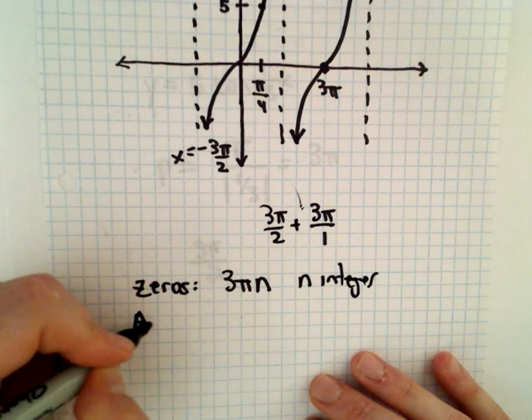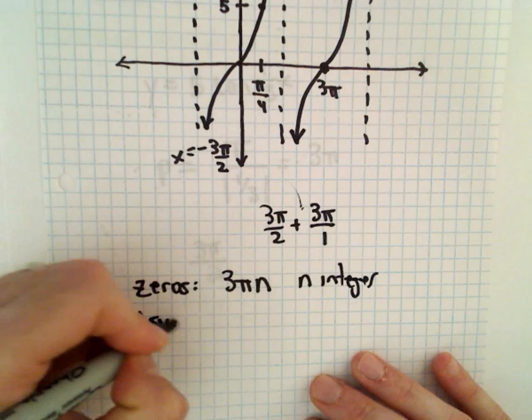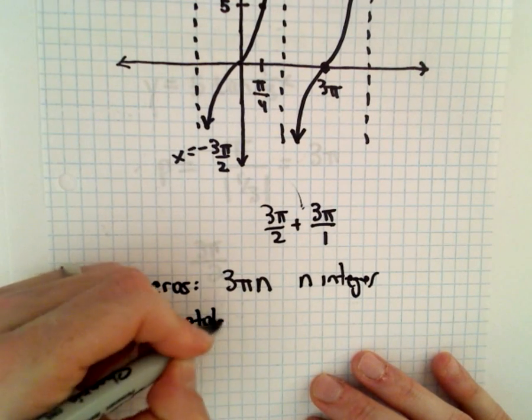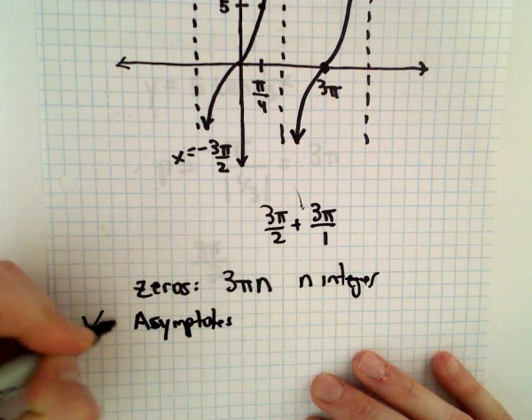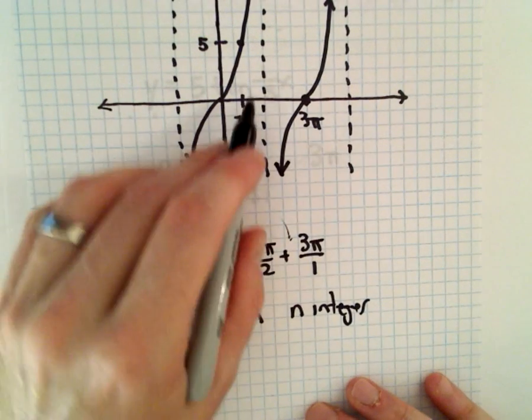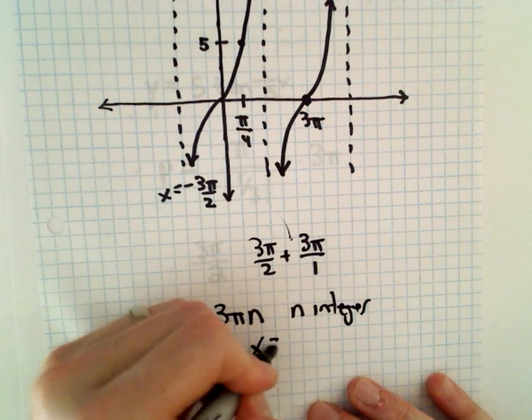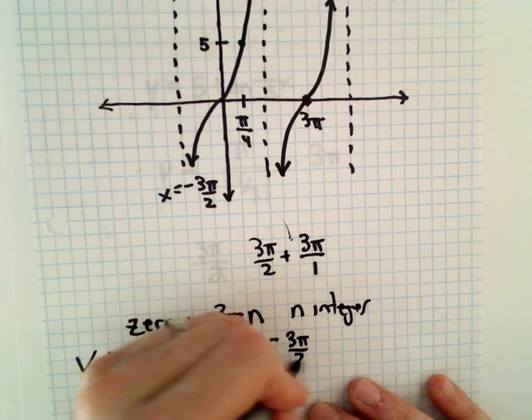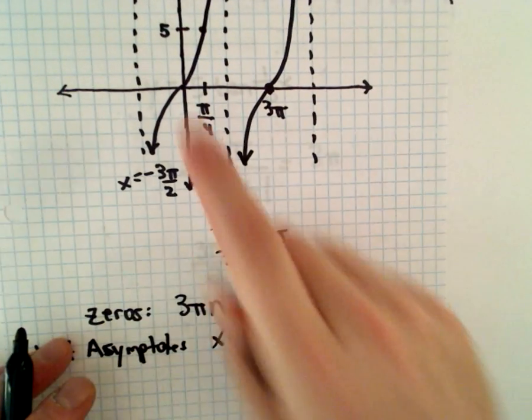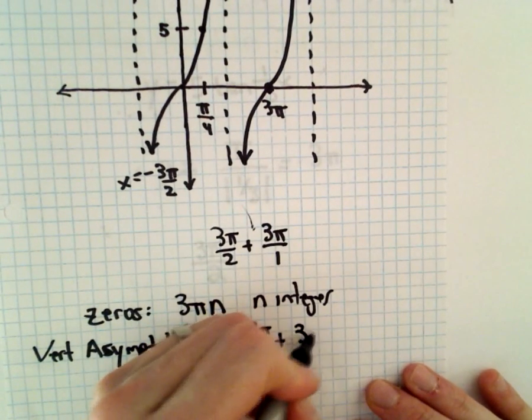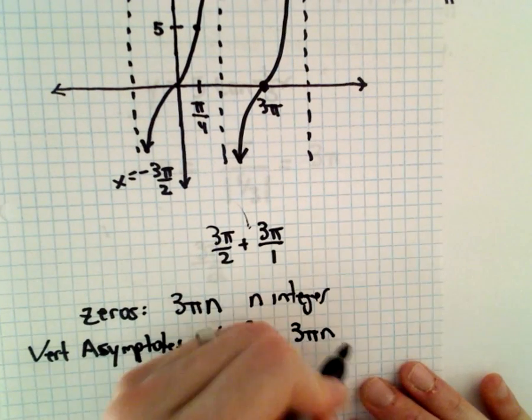And the vertical asymptotes are going to occur at x equals three pi over two. And again, we're adding three pi to get to the next one. So multiples of three pi, where n is an integer.